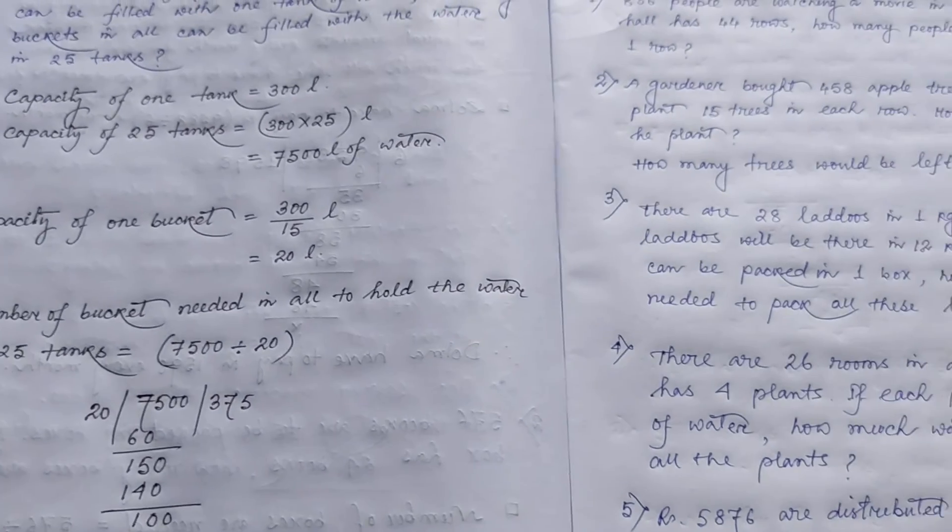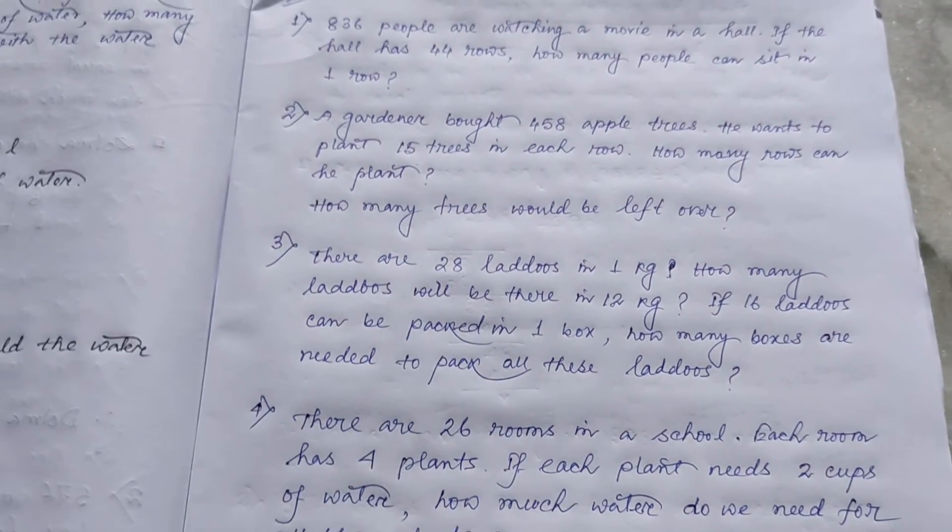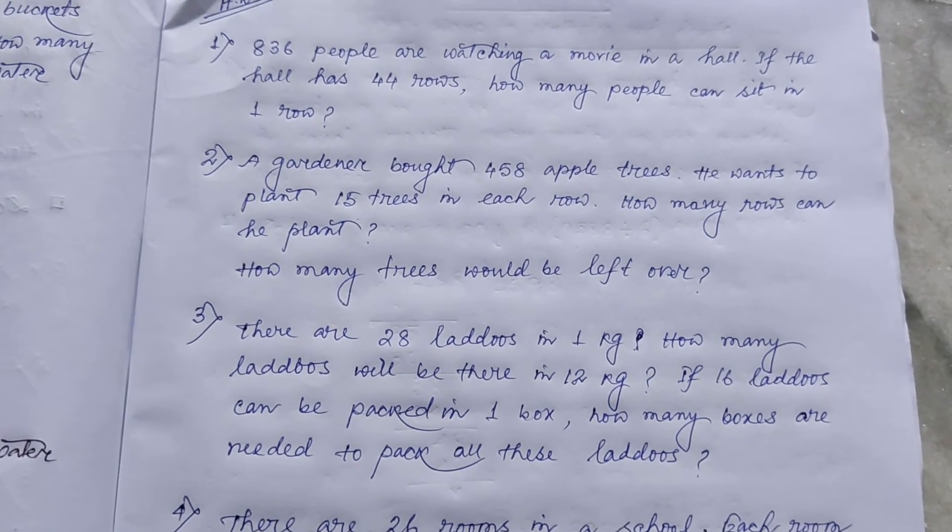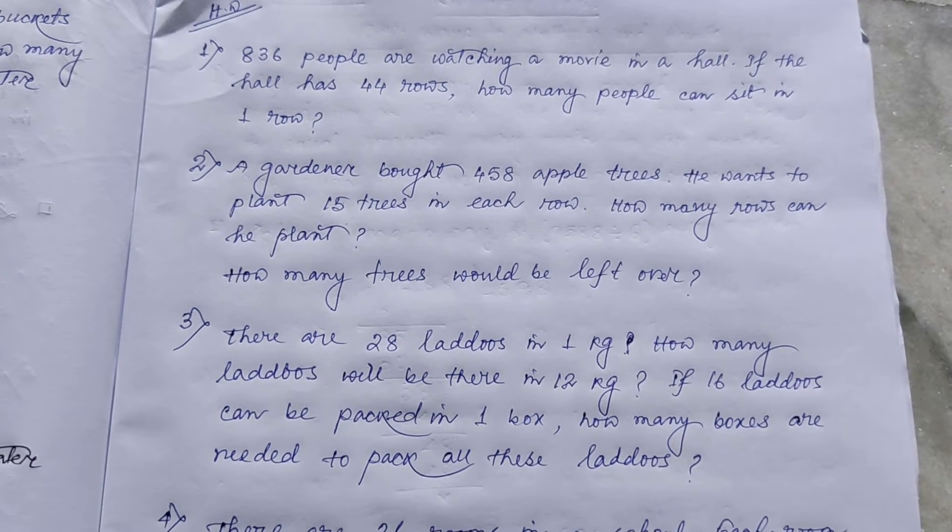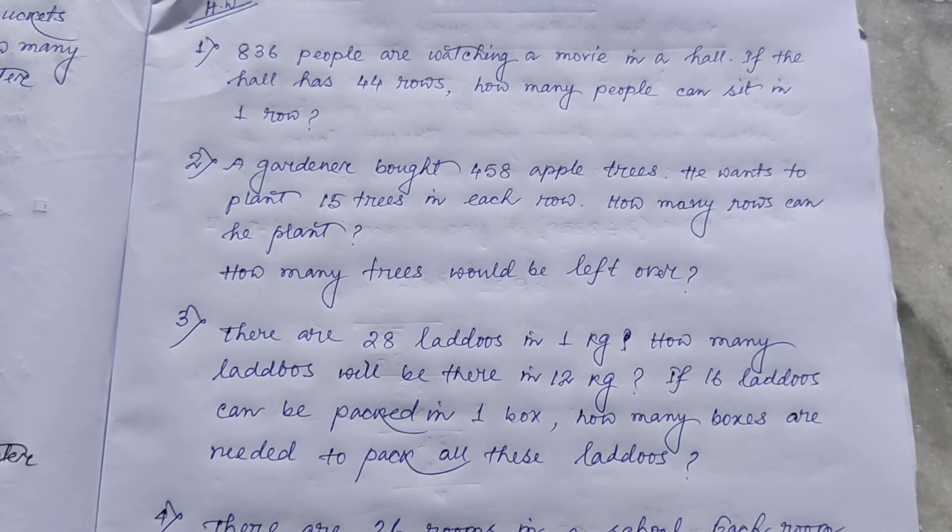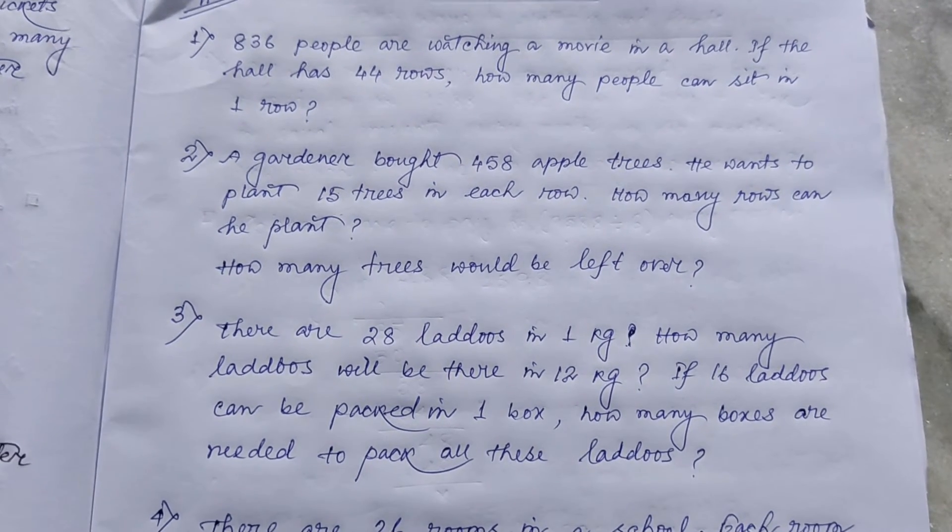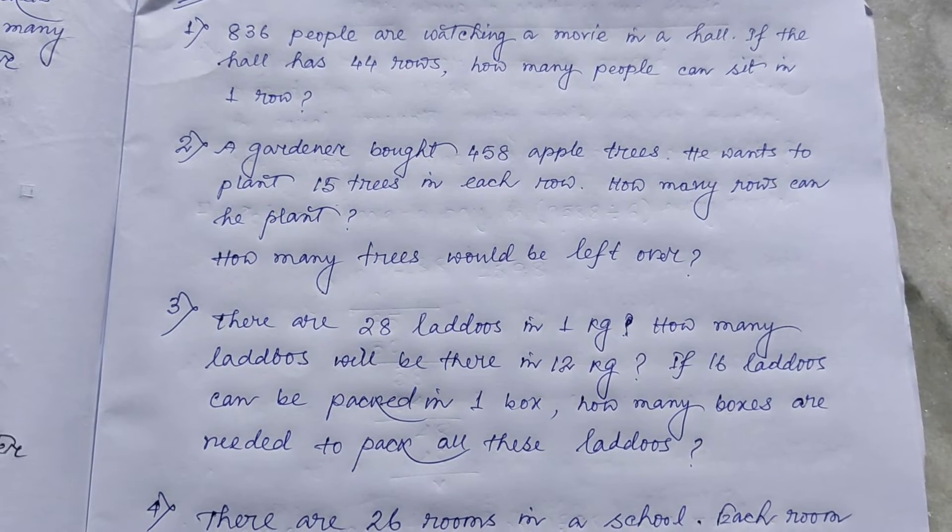Now come to the homework part. This homework you have to do in your classwork copy. Number 1. 836 people are watching a movie in a hall. If the hall has 44 rows, how many people can sit in one row?